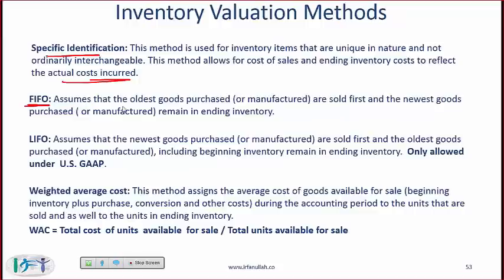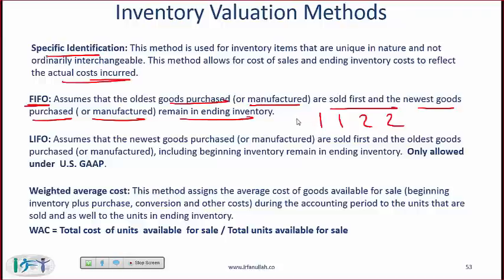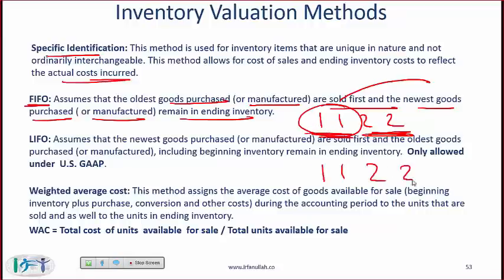FIFO — first in first out — assumes the oldest goods purchased or manufactured are sold first and the newest remain in inventory. Using the 1-1-2-2 example, with FIFO the items bought for one dollar and one dollar are sold, while the two and two remain on the balance sheet, so the balance sheet reflects current prices and the income statement reflects older prices. With LIFO — last in first out — we sell the two and two, so the income statement reflects current prices and the balance sheet reflects old prices.